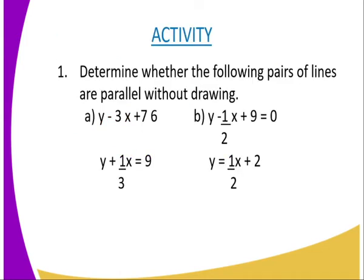We have come to the end of today's lesson, and I'm going to mark the end by giving you an assignment. The question reads: determine whether the following pairs of lines are parallel without drawing a Cartesian plane. Part 1a: the equation of line 1 is y minus 3x plus 76 equals 0, and the second line reads y plus 1 over 3x equals 9.